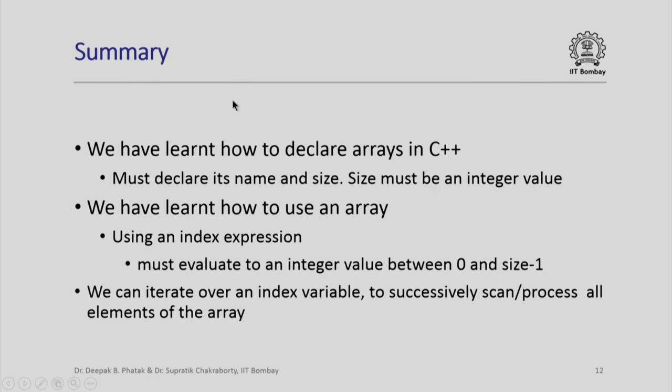In short, we have learnt how to declare arrays in C++. We note that we must declare its name and size, and size must be an integer value. Please note that it cannot be a variable or expression in declaration because those many locations have to be allocated by the compiler even before execution starts. We have learnt how to use an array using an index expression. We must evaluate index expression to an integer value that is always between 0 and size minus 1. We can now iterate over an index variable to successively scan, use, and process all elements of the array as we like. Thank you.